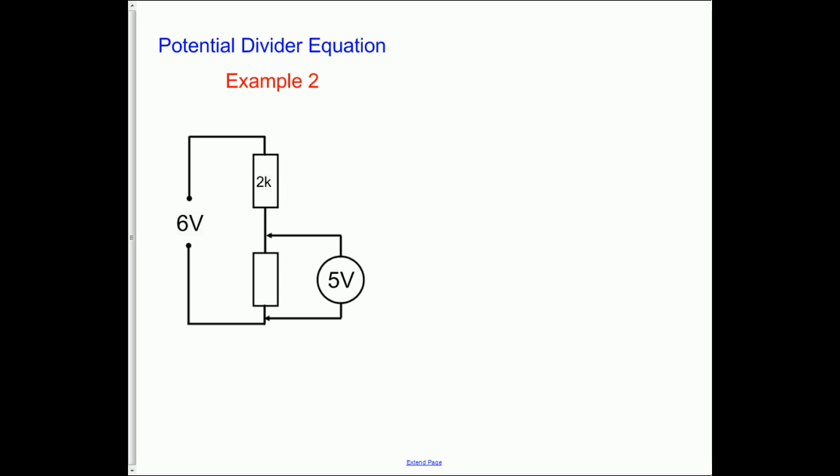Example number two. What we're asked to find here is the value of the missing resistor. We'll draw our voltages on again. We've already been told we've got 5 volts here and therefore because we've got 6 volts as our supply voltage we must have 1 volt just here.